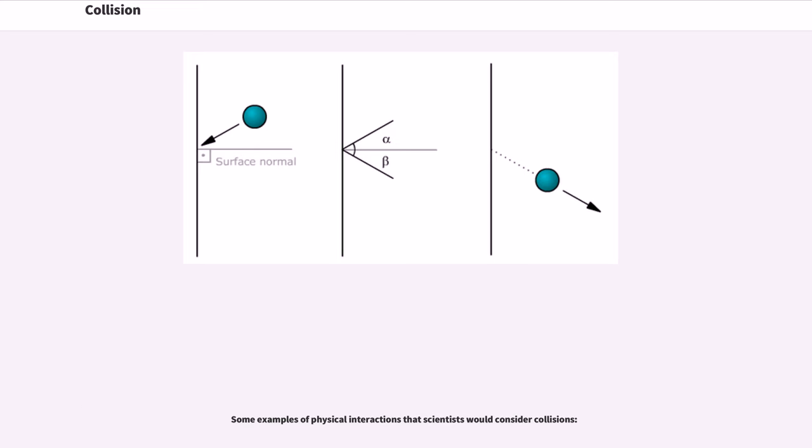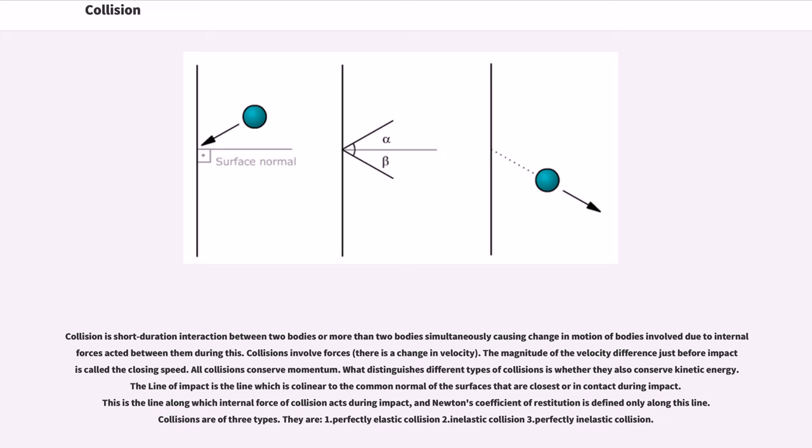Some examples of physical interactions that scientists would consider collisions. Collision is short duration interaction between two bodies or more than two bodies simultaneously causing change in motion of bodies involved due to internal forces acted between them during this.